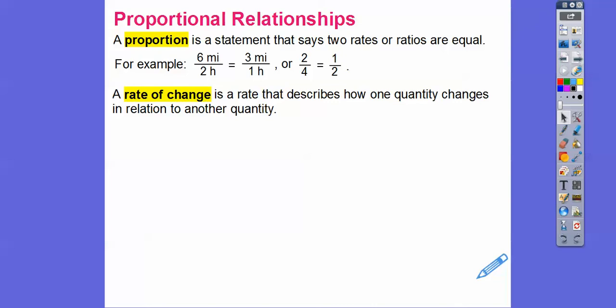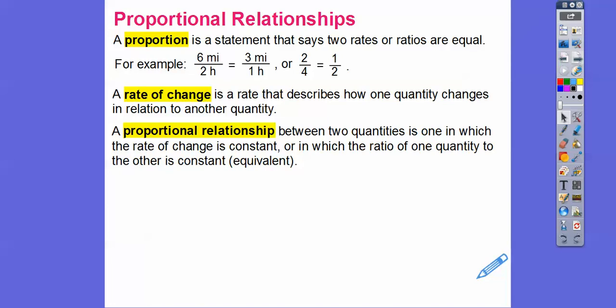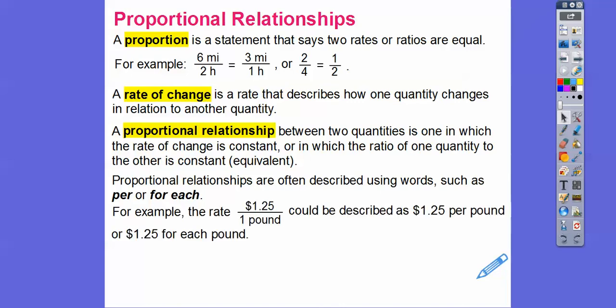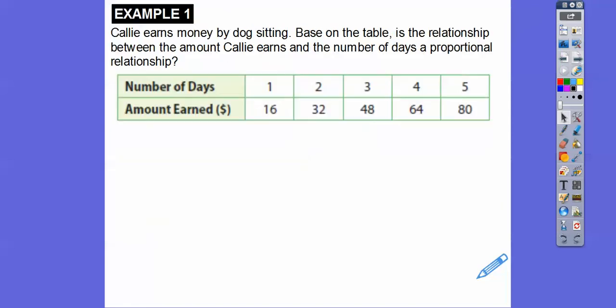A rate of change is a rate that describes how one quantity changes in relation to another — like 3 miles for every hour. A proportional relationship between two quantities is one in which the rate of change is always constant, meaning the ratio of one quantity to the other is constant, or equivalent. Proportional relationships are often described using the words 'per' or 'for each' — for example, 55 miles per hour, or $1.25 per pound, which is the same as $1.25 for each pound.